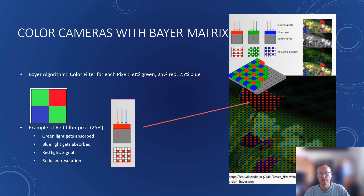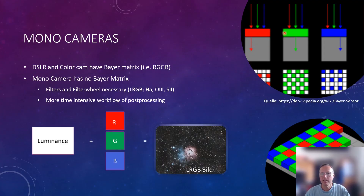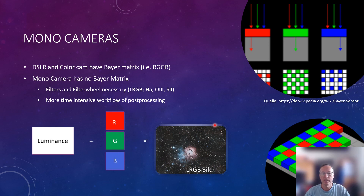With mono cameras, there is no color filter on top of the pixel — all pixels can receive all light. When we use a mono camera, since there's no Bayer matrix, we use external filters: a red filter, a green filter, a blue filter, and a luminance filter. The luminance filter is essentially a UV/IR cut filter. The majority of the light goes into luminance, and the rest — about 50% — is equally distributed to red, green, and blue. Luminance brings you resolution, fine details, and quality.